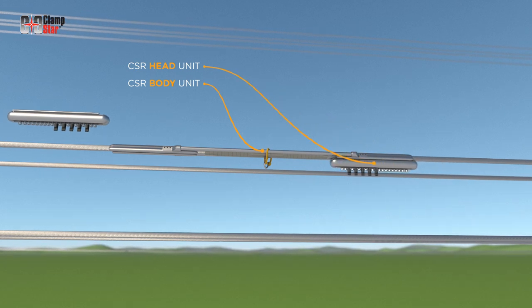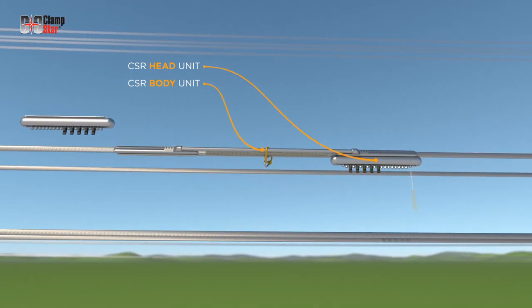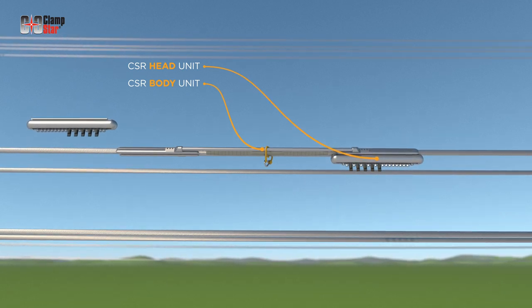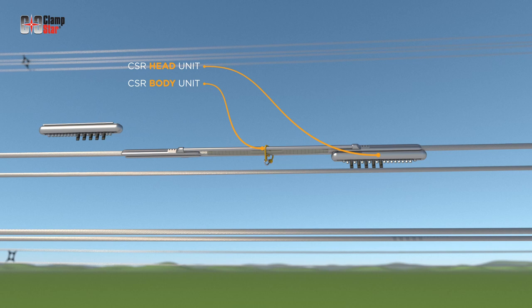Slide one head unit onto the body until it hits the stop point. Snug up one or two fasteners to maintain the unit's position. It's important to note that all ClamStar Transmission Heads are unidirectional.